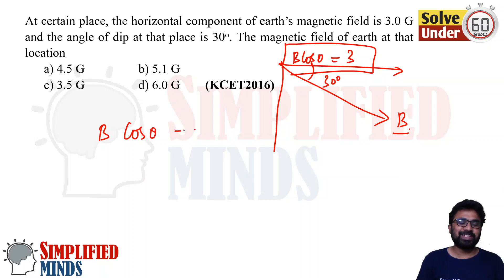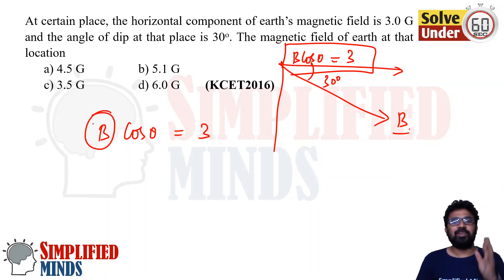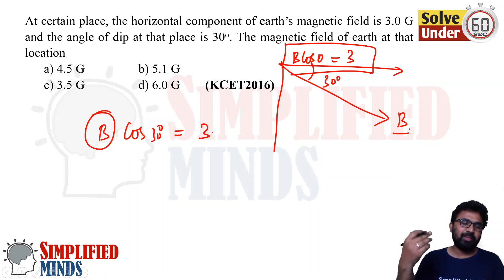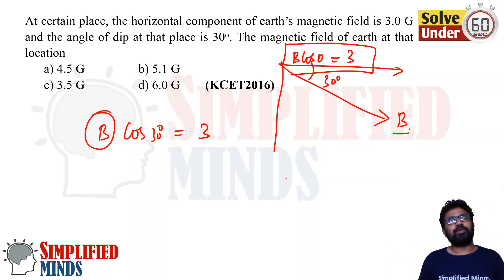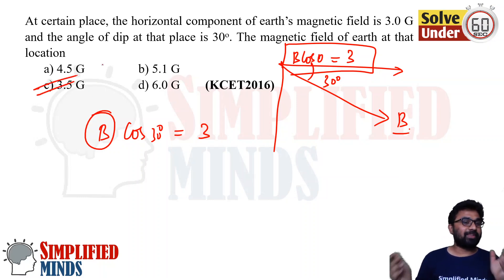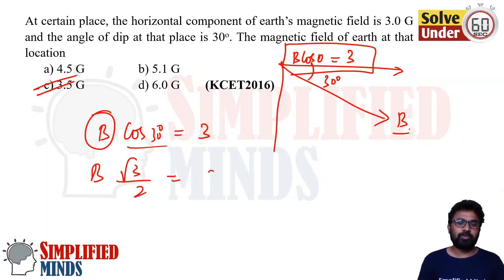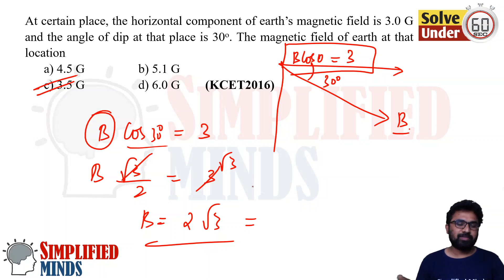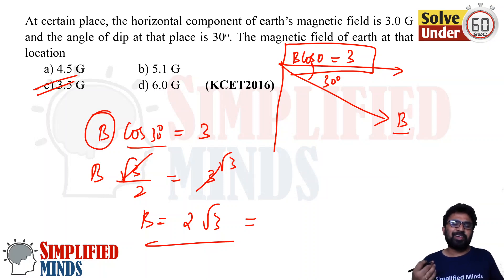It's a basically pure mathematics question. B·cos(theta) is the horizontal magnetic field. So B·cos(30°) = 3. Cos 30° is root 3 divided by 2. Therefore B = 3 divided by (root3/2) = root 3 into 2 = 1.7 into 2 = 3.4, approximately 3.5. That's the answer. It's a basic trigonometric question.